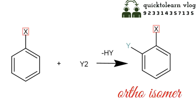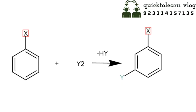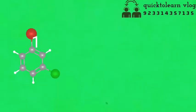When X-substituted benzene is Y-substituted, the ortho product is formed when X and Y are present adjacent to each other. This is the ortho isomer in which two substituents are present on carbon number one and carbon number two. When X-benzene is substituted by Y and Y is present on the third carbon, that is called the meta product, with the two substituents attached at carbon number one and carbon number three.